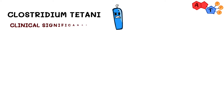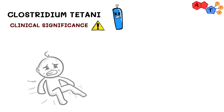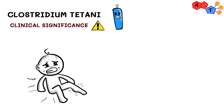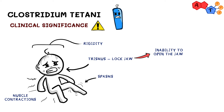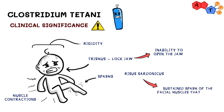From the pathogenesis we've just explained, we can expect patients infected with Clostridium tetani to develop symptoms like spasms, muscle contractions, and rigidity. One classic symptom is lockjaw, or trismus, which is inability to open the jaw. The other classic symptom is risus sardonicus, which is the sustained spasm of facial muscles that appears to produce grinning.